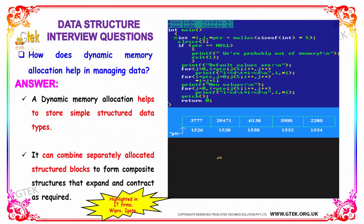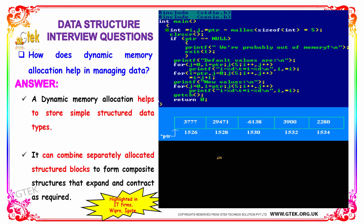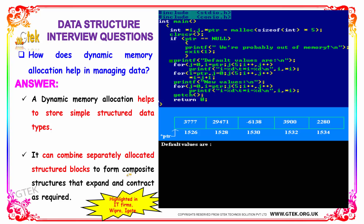Our next question is: how does dynamic memory allocation help in managing data? Dynamic memory allocation helps to store simple structured data types. It can combine separately allocated structured blocks to form a composite structure that expands and contracts as required during run time. These kinds of questions are highlighted at Wipro, iGate, and other IT firms.